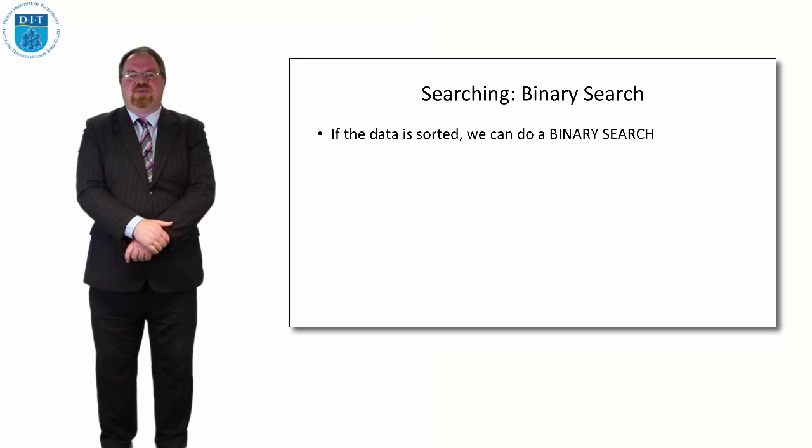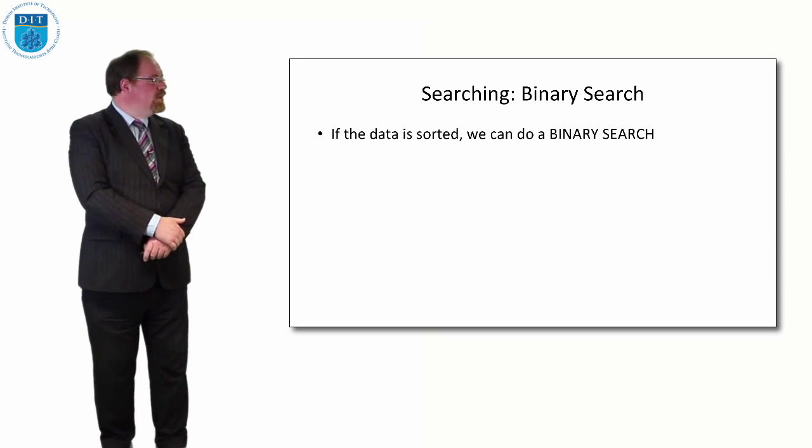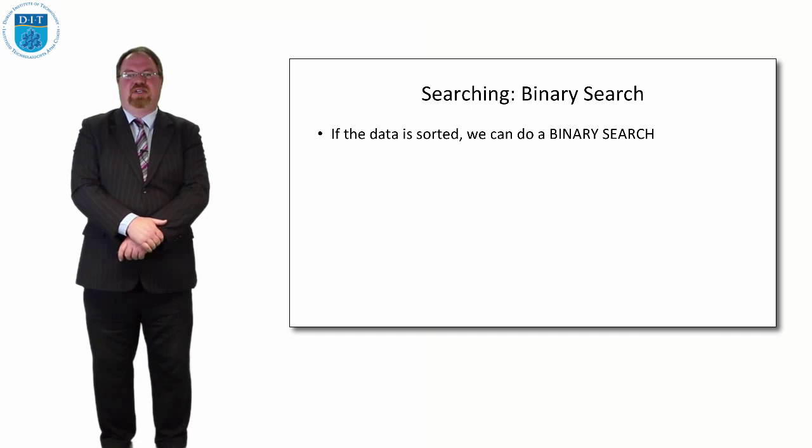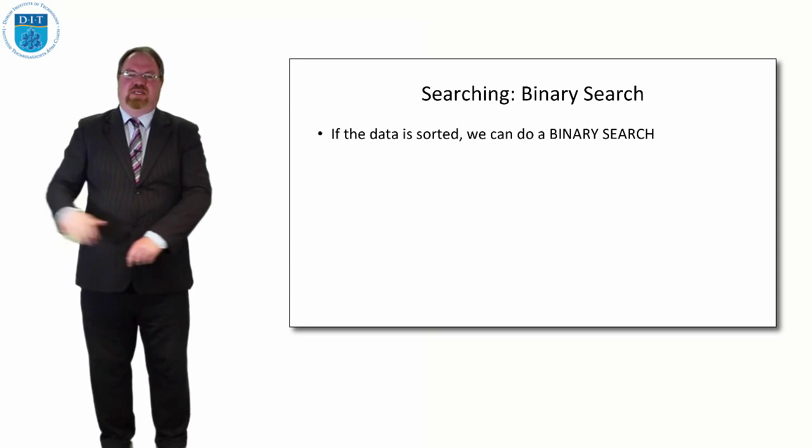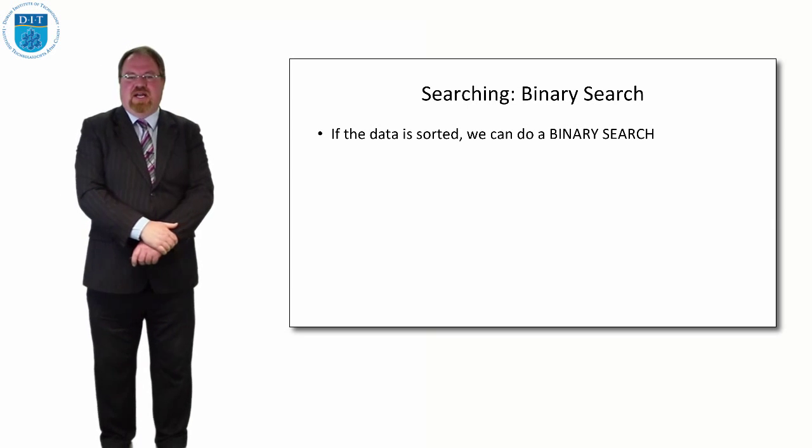There is a trick we can do to speed things up and we've kind of alluded to it already. We can speed things up by sorting the data first. So if we take the elements of the array and sort them smallest to biggest then we can do what's called a binary search.